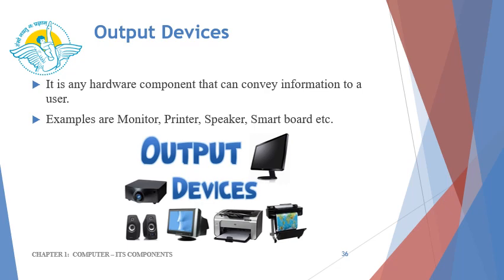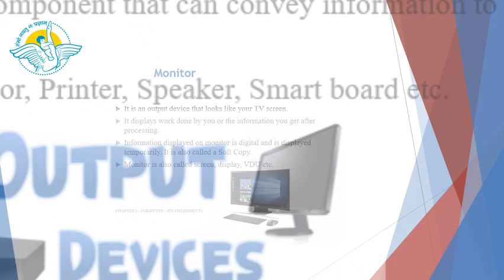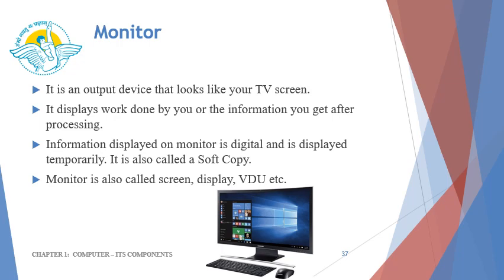Now let us see the various examples of output devices. An output device is any hardware component that can convey information to a user. The most popular examples of output devices are monitor, printer, speaker, smart board, etc. A monitor is an output device that looks like your TV screen. It displays work done by you or the information you get after processing. Information displayed on a monitor is digital and is displayed temporarily — it is also called a soft copy. Monitor is also called screen, display, video, etc.